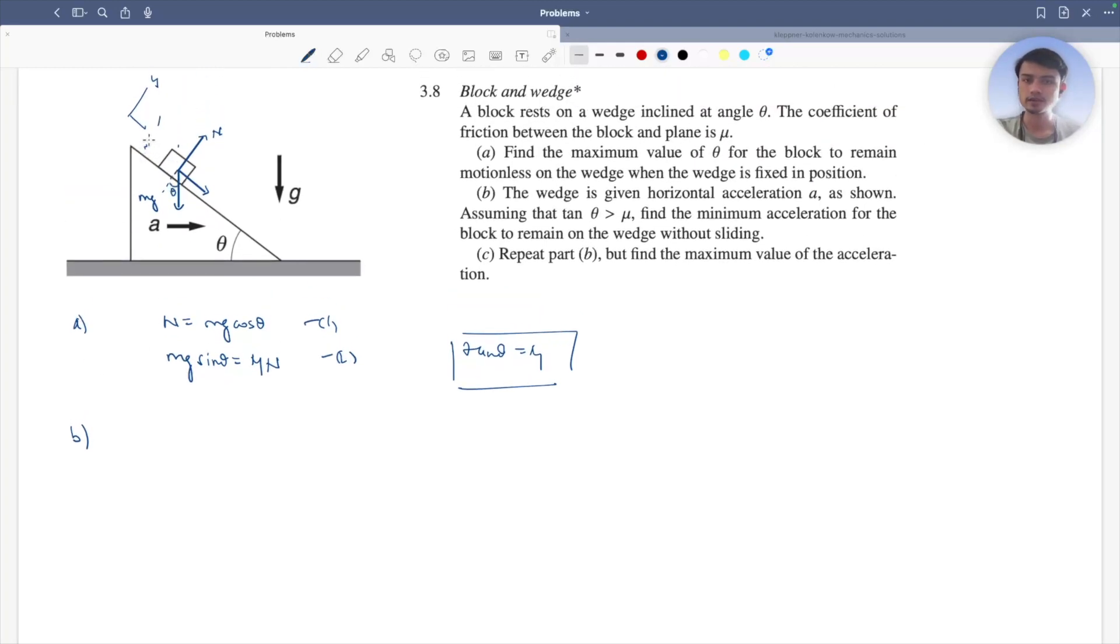So what happens is that again, you have your frictional force. You have your frictional force out there and immediately you take a perpendicular out there and this is theta and this is your mg sin theta. The wedge is given a horizontal acceleration a and you want to find the minimum acceleration so that block remain on the wedge.